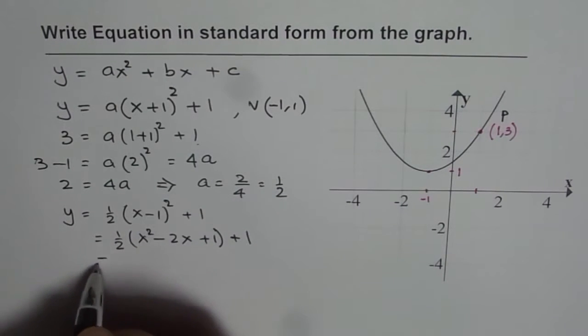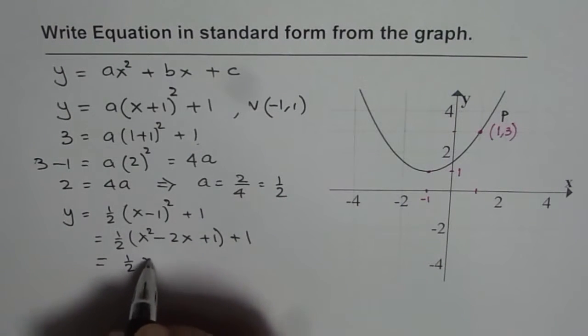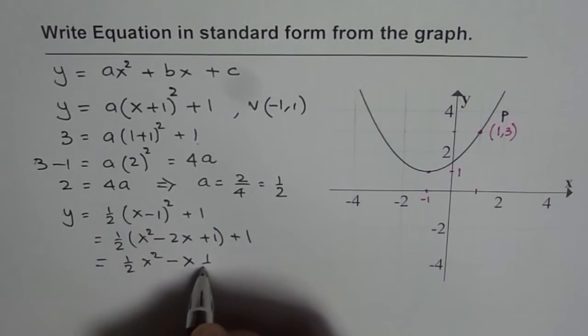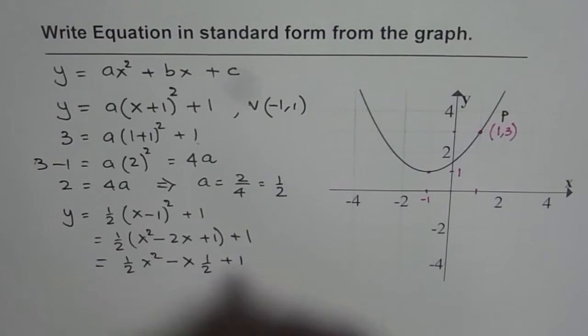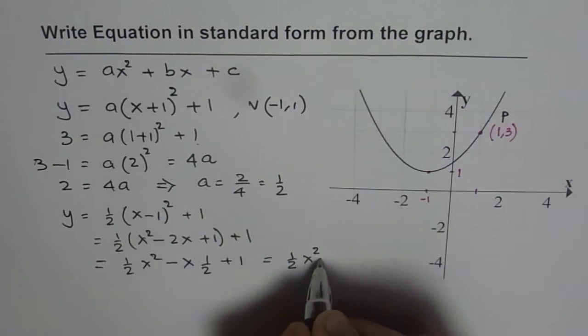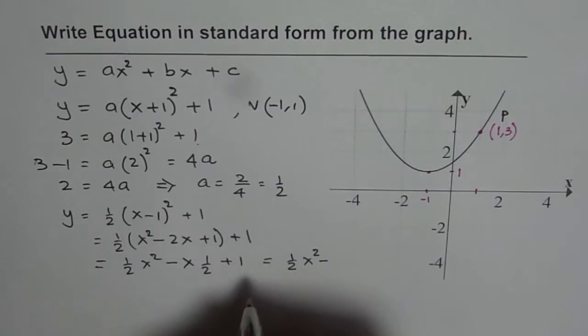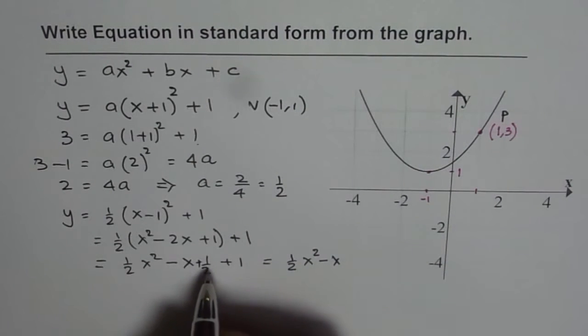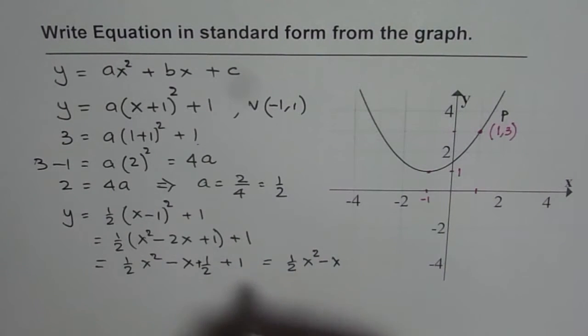So half x squared, half times minus 2x is minus x, and then we get half plus 1. Or we can write this as half x squared minus, I should have written plus here in between, minus x and half plus 1 is 3 over 2.